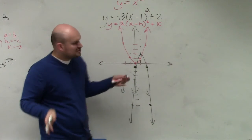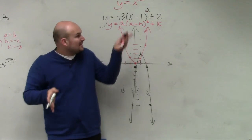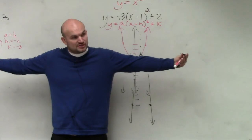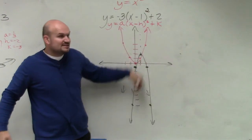Do you guys see how this graph has been compressed? So when a is larger, it compresses it. When a is smaller than 1, it stretches it. And the negative makes it go down.